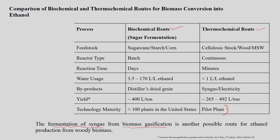In a comparative analysis, the feedstock used in regular sugar fermentation is sugarcane, starch, and corn, whereas in the thermochemical route the process uses a continuous reactor — an advantage over fermentation. Reaction time in fermentation is some days to convert raw material to ethanol, whereas in the thermochemical route it is in minutes.